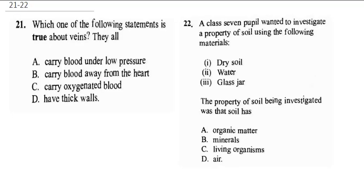Question 21 says: which one of the following statements is true about veins? Veins carry deoxygenated blood from all parts of the body to the heart. They don't carry blood away from the heart — that's what arteries do. Arteries carry oxygenated blood away from the heart to other parts of the body and have thick walls. Veins carry blood under low pressure. This is correct because veins carry blood from other parts of the body back to the heart, and that blood does not contain oxygen. So the correct answer is A.